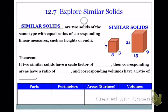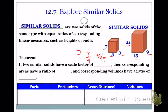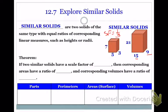So if we were to write ratios amongst the corresponding linear measures, that would look like 5 to 15, 3 to 9, and 7 to 21. And if we reduce all of those, they reduce all down to 1 to 3. So the scale factor of these two solids is 1 to 3. That's what we did before with similar shapes — we came up with the scale factor between corresponding parts.